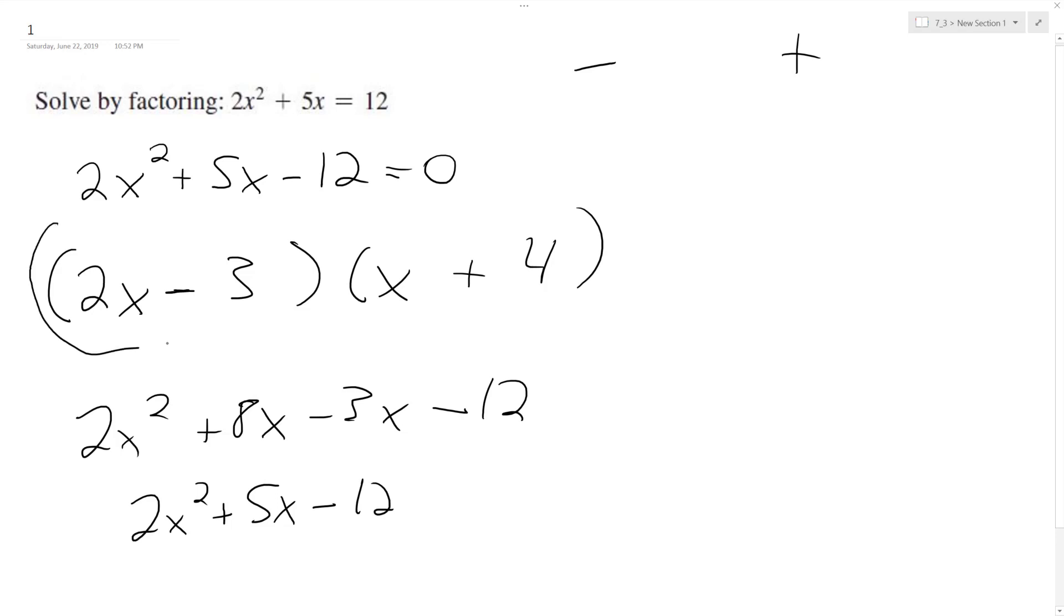So this is our factored form, but we need the actual results. So we have x is equal to negative 4. It's to get whatever's inside these equal to 0. And 3, or not 3, 3 halves.